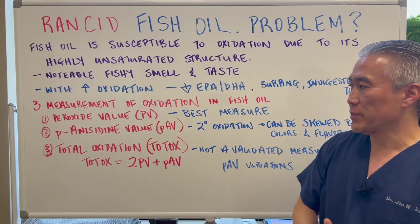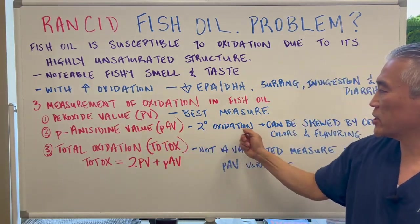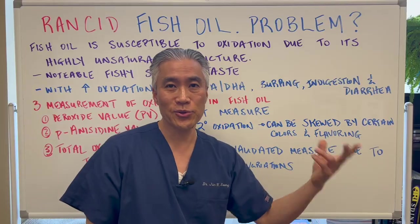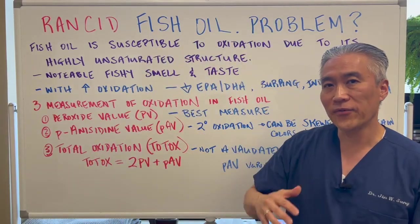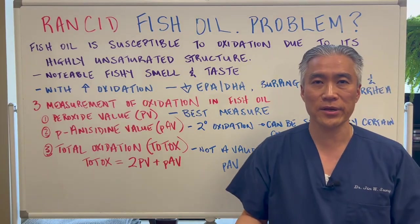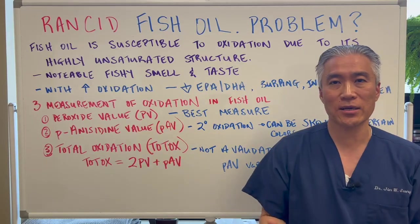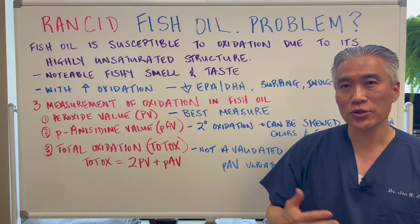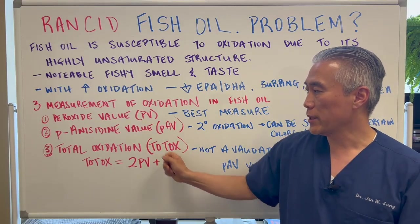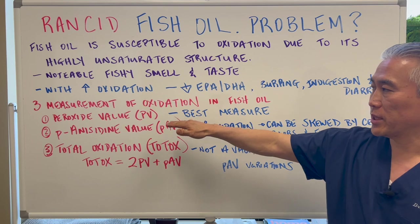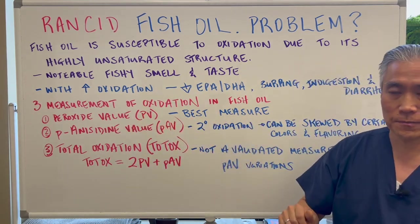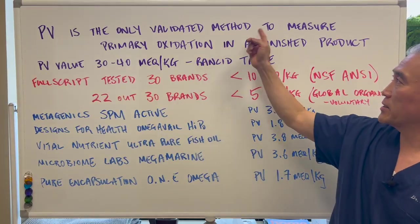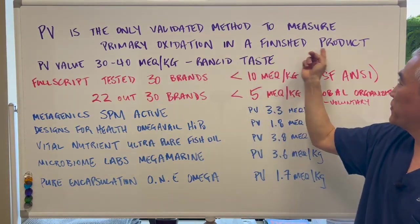There is a problem with a couple of these measurements. p-Anisidine is secondary oxidation and can be skewed by certain colors or flavorings used in the product. This value may vary depending on what kind of colors or flavorings are utilized, so it's better used when you have raw material that you want to check. Total oxidation will also be skewed because p-AV impacts that number. So the best measurement really is peroxide value for fish oil — PV is the only validated method to measure primary oxidation in a finished product.